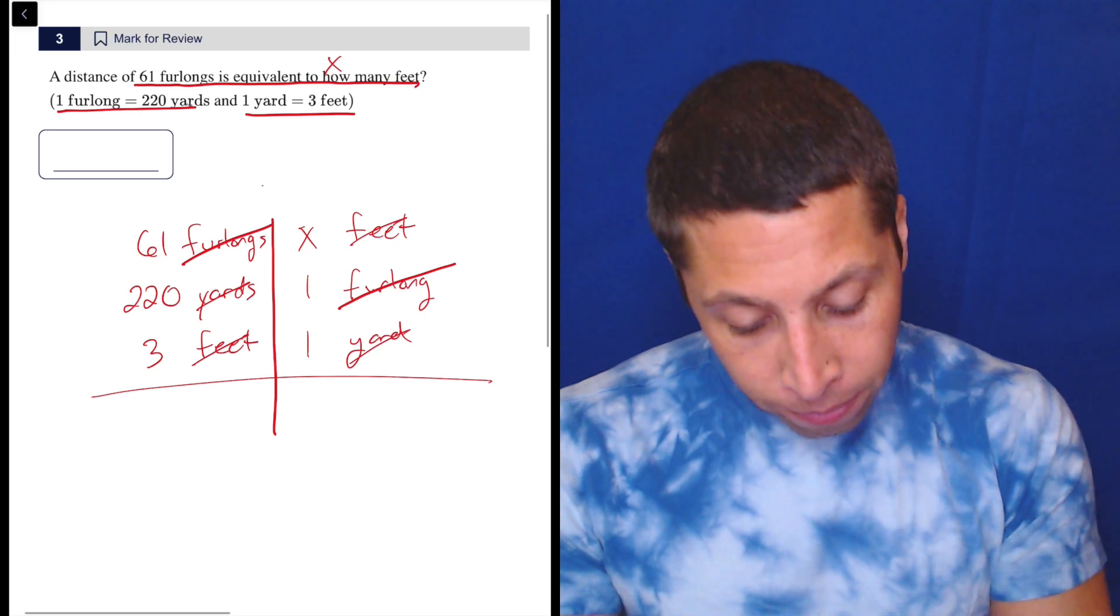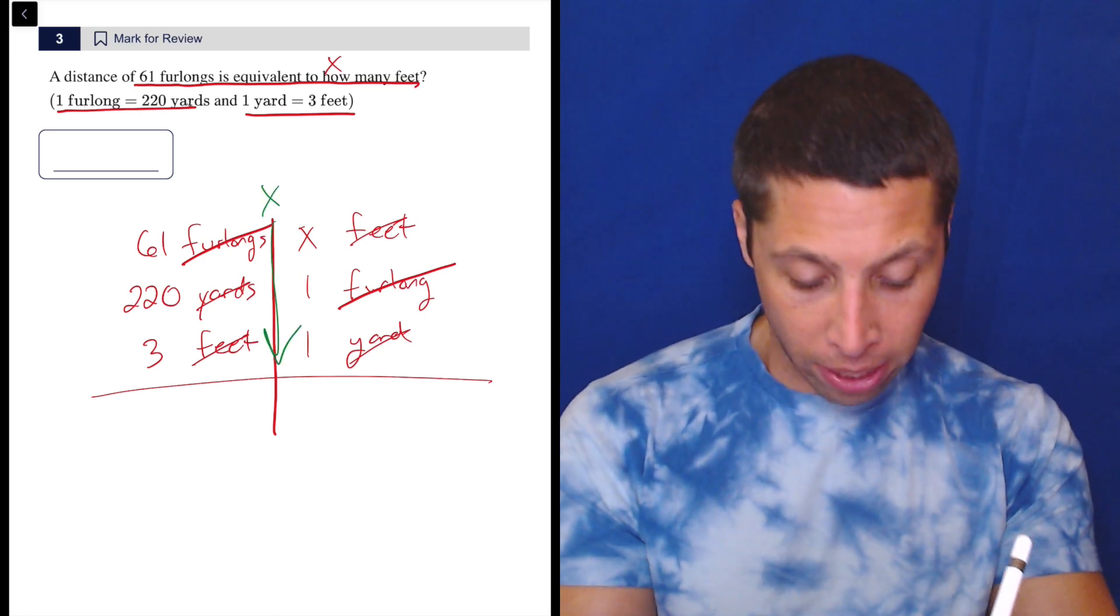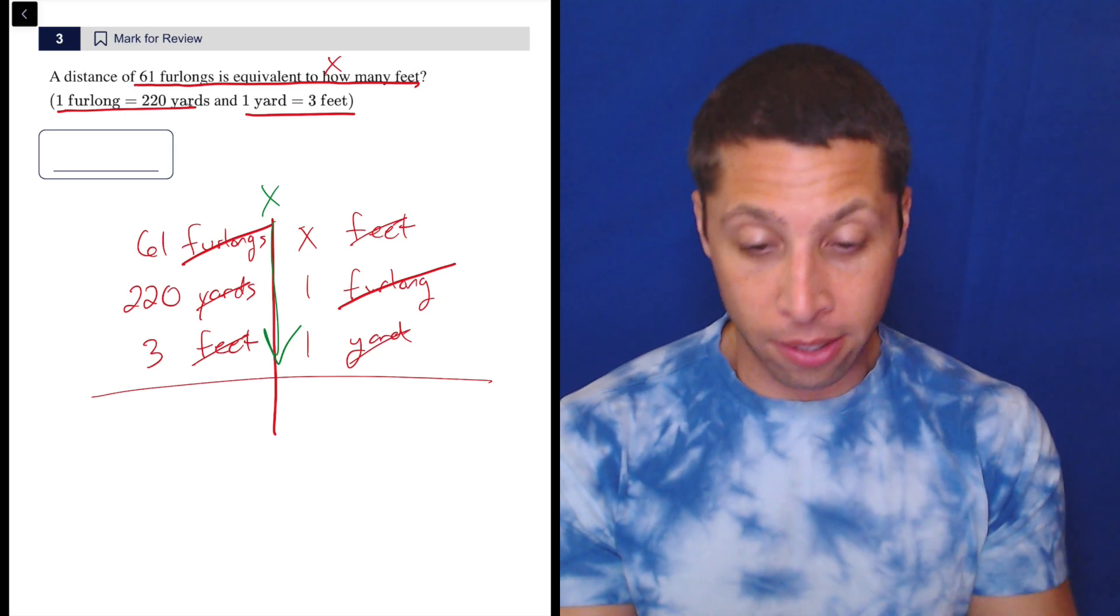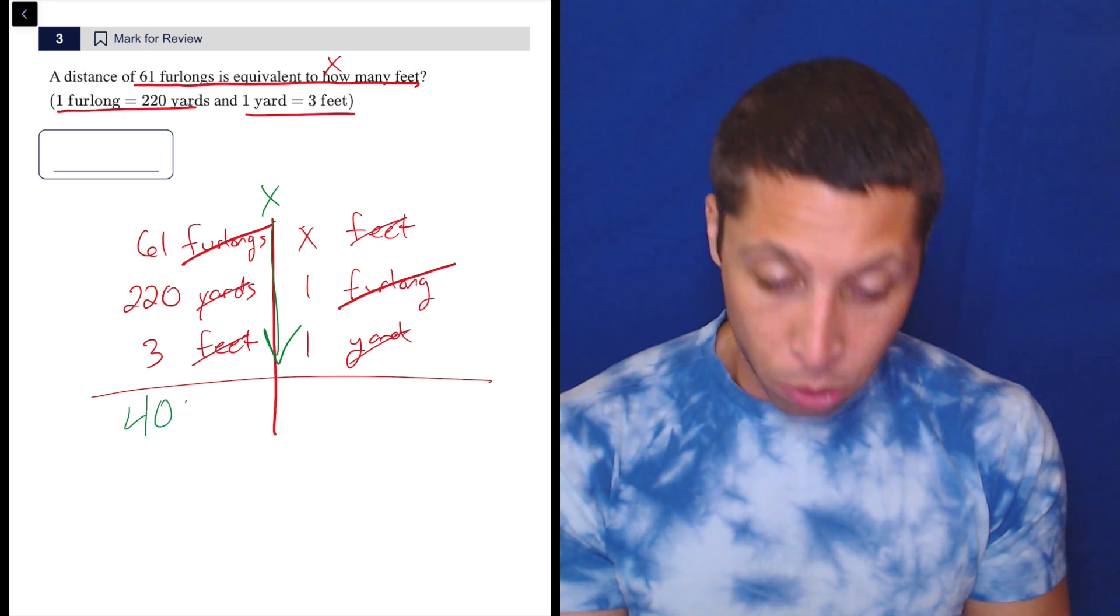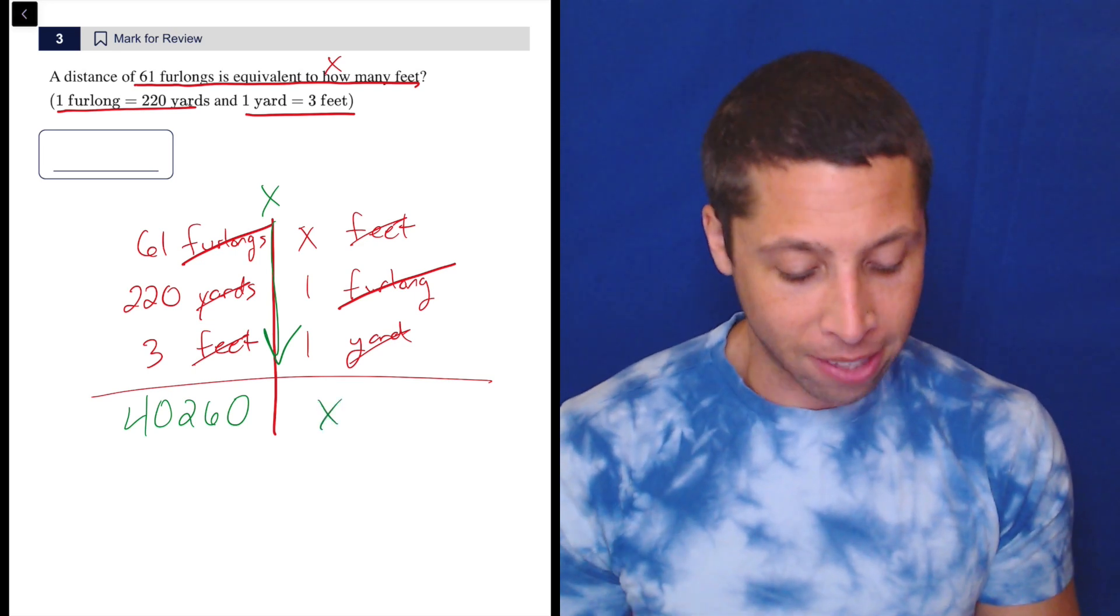Multiply down. And there you go. So 61 times 220 times 3. Regular calculator: 61 times 220 times 3 is 40260. And X times one times one is X.